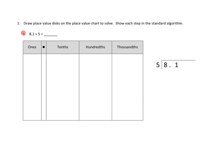We've got problem number 1 and I'm going to do part B of number 1. We're asked to draw place value disks on the place value chart to solve, and show each step in the standard algorithm. Tonight I want to go ahead and do those kind of simultaneously, so I'll do a little part of it here and then I'm going to shift over to the standard algorithm over here.